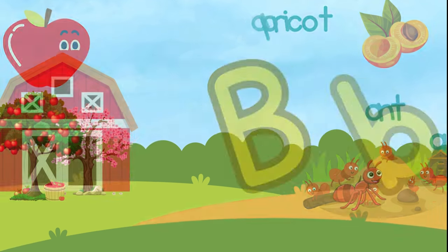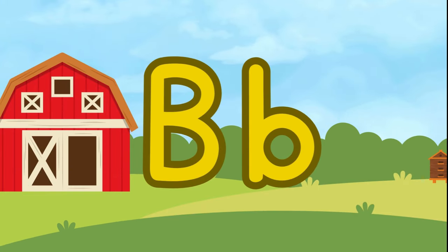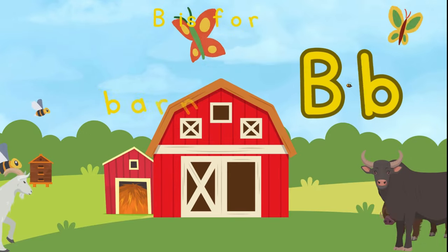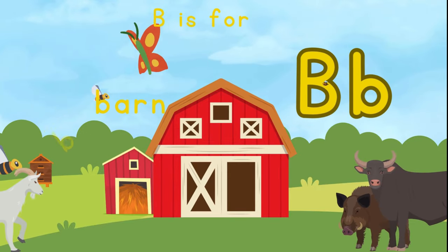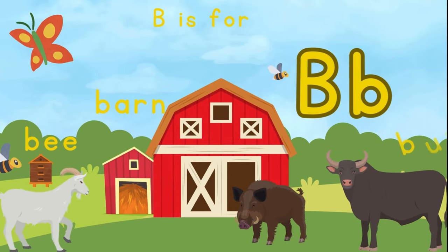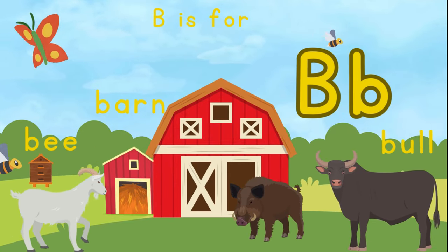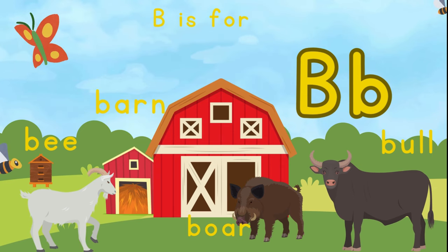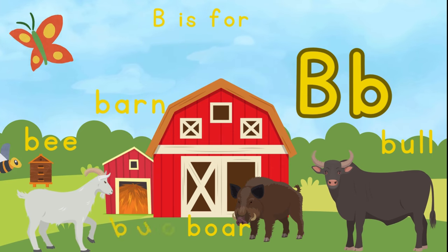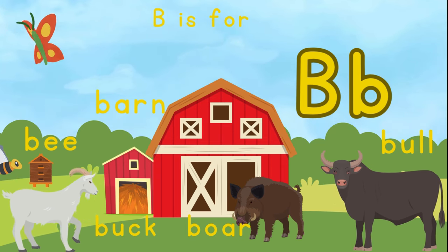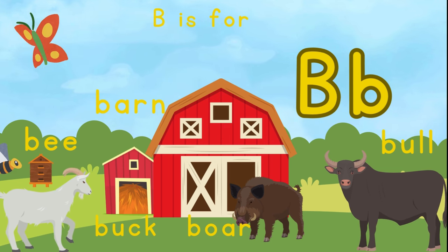This is the letter B. B is for barn. B is for bee. B is for bull. B is for boar. B is for buck. And B is for butterfly.